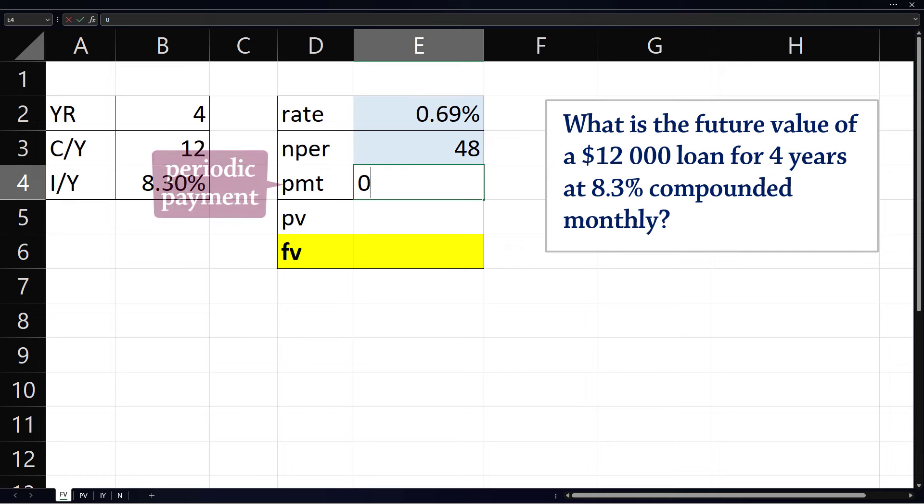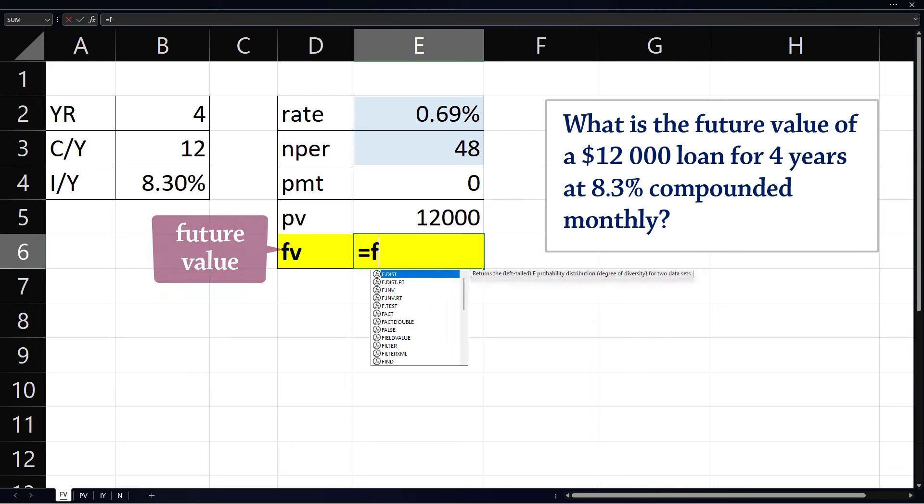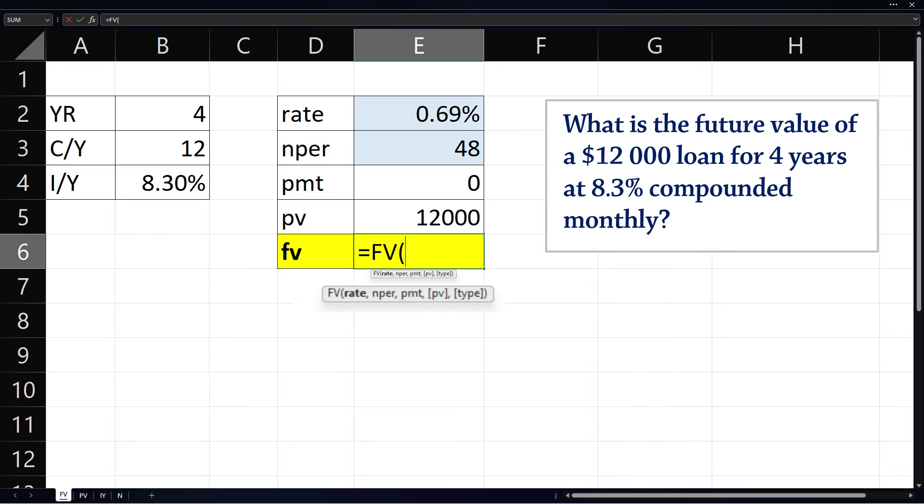Since there is no periodic payment, we enter 0 for payment. The present value here is 12000. To calculate the future value, type equals FV, press tab to select it. Then click rate, comma, number of periods, comma, periodic payment, comma, and finally present value. Type in brackets here only applies to annuities, so it's not needed here.